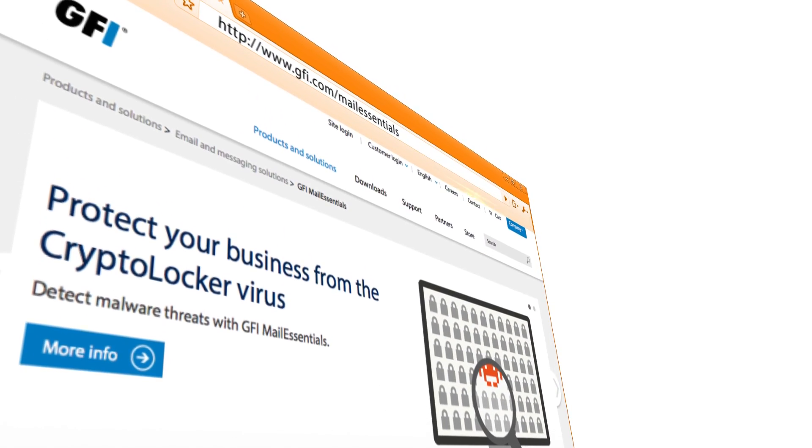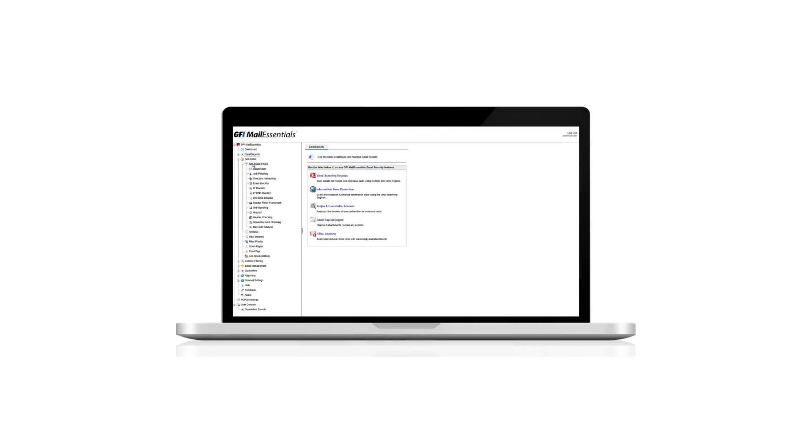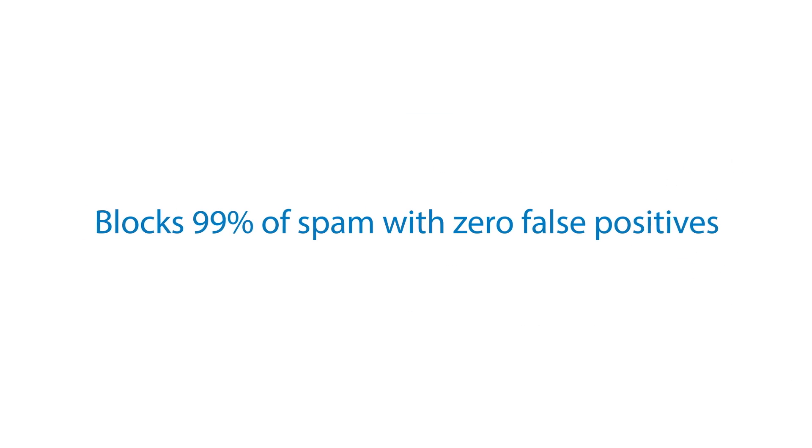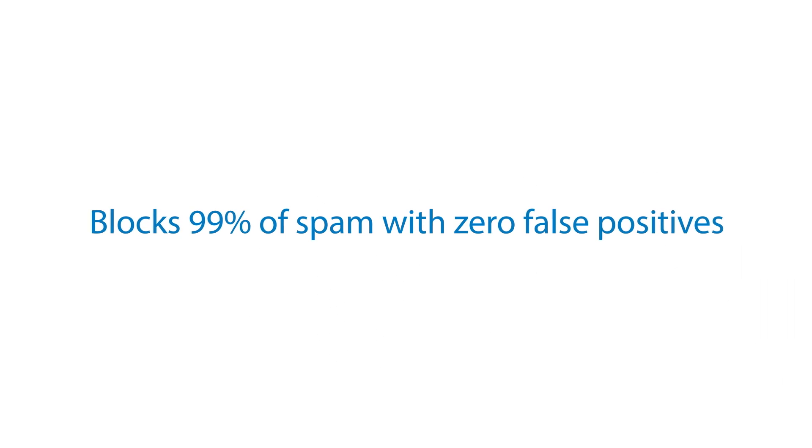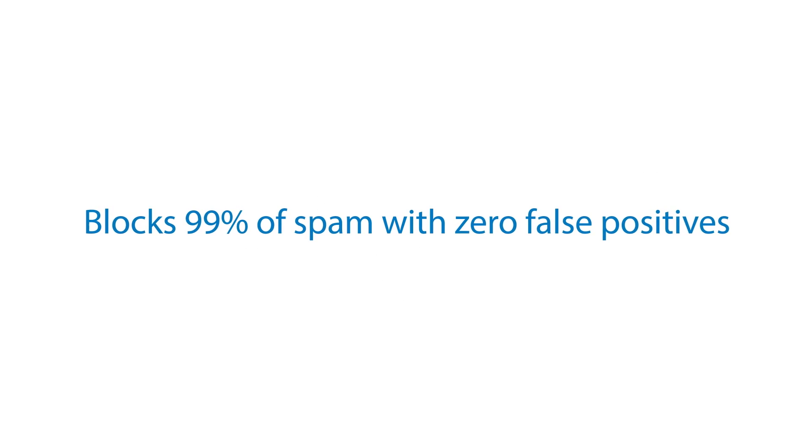Combine both editions in the Unified Protection Edition, and this gives you protection on all fronts. With several plugins, including our SpamRazer technology, Bayesian, DNSBL, PURBL, and more, GFI Mail Essentials helps you block more than 99% of spam with zero false positives.